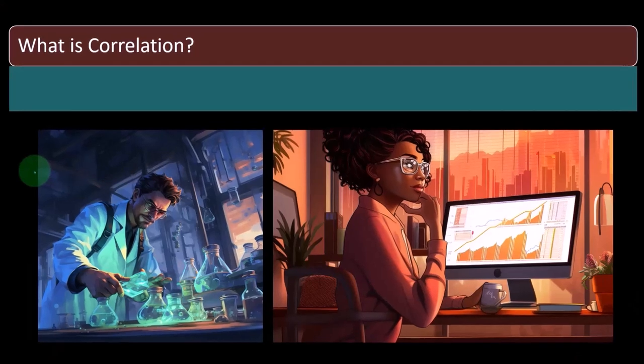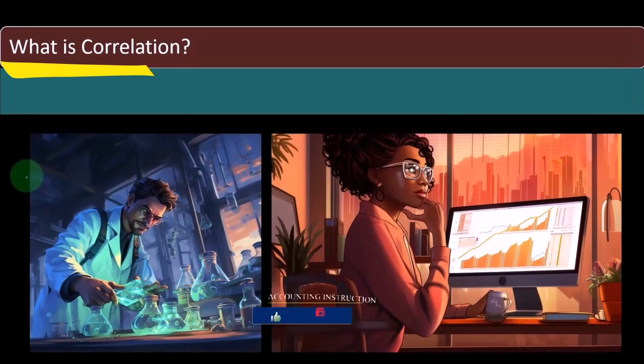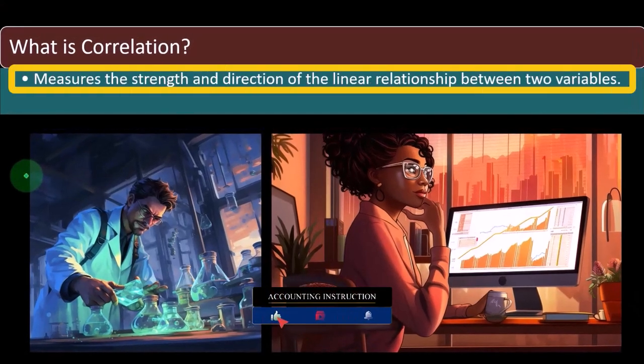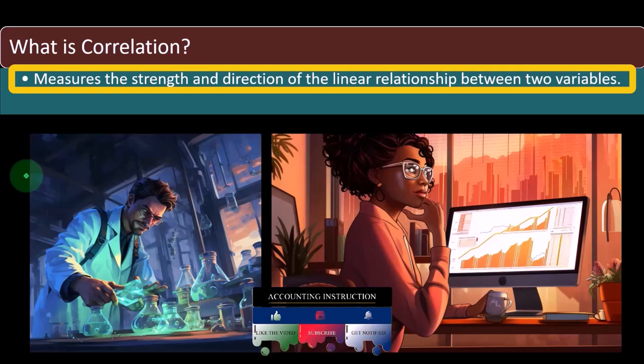First question: what is correlation? Correlation measures the strength and direction of the linear relationship between two variables.